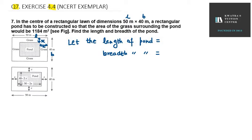In this case, there will be some change in the length of the pond. If we have a rectangular lawn of 50, then the pond length will be 50 minus 2x.